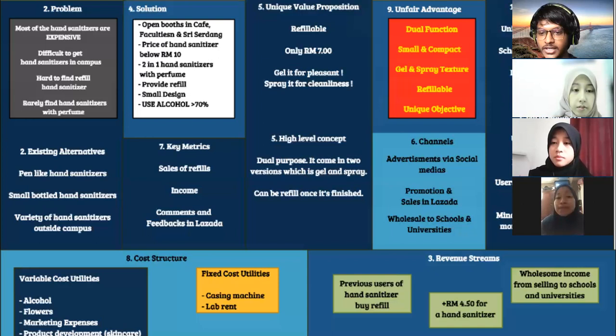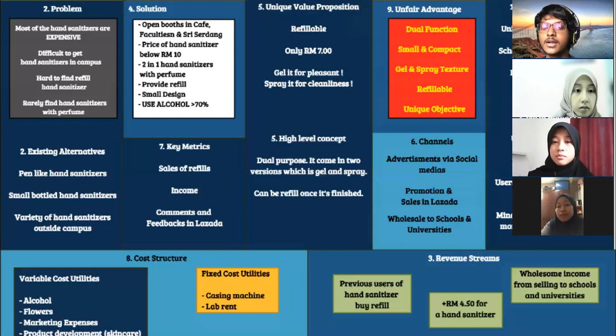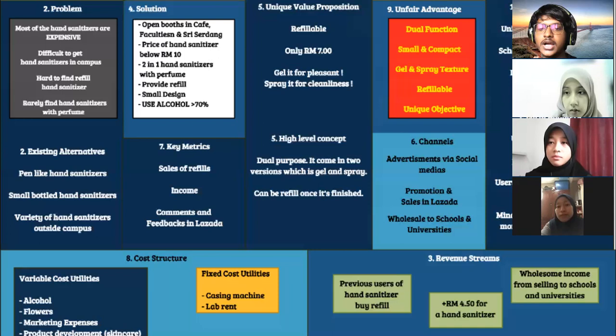The second revenue stream is earning approximately four ringgit fifty cents profit per hand sanitizer sold, based on our financial planning and cost calculations. The third revenue stream is wholesale income from selling to schools and universities. Our main goal is to sell to low-income people and students who cannot afford hand sanitizer individually, so selling in bulk to universities and schools generates additional revenue.